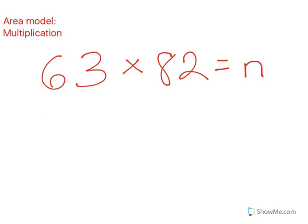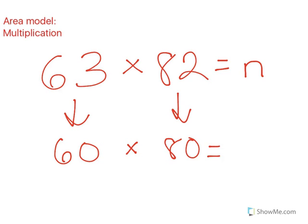The problem I'm going to solve is 63 times 82. First, I'm going to estimate the product. That will help me know if my final product is reasonable. I'm going to round 63 to 60, and I'm going to round 82 to 80. 60 times 80 is 4,800. So my final product of 63 times 82 should be close to 4,800.